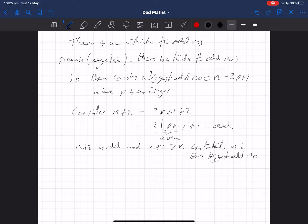If that was wrong, then the negation of that must be true. And so therefore, there are an infinite number of odd numbers.